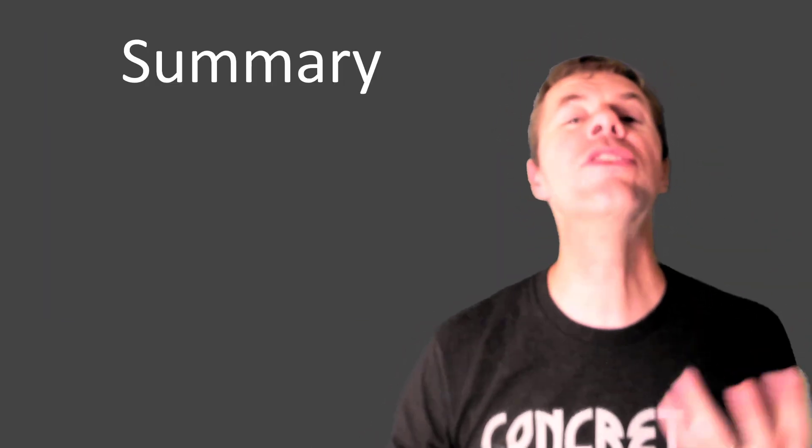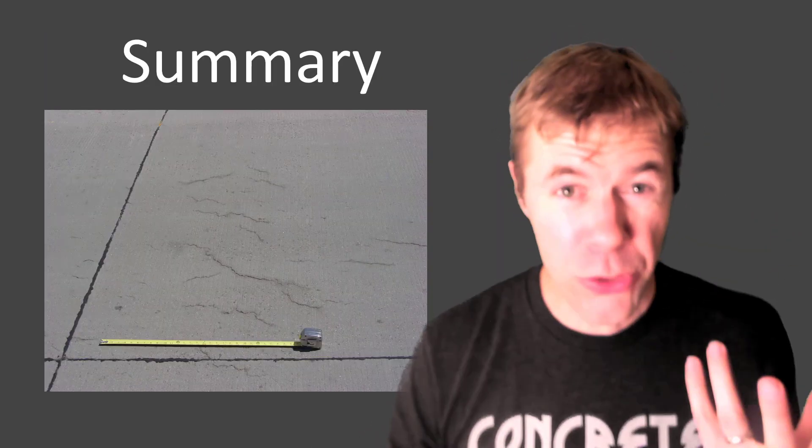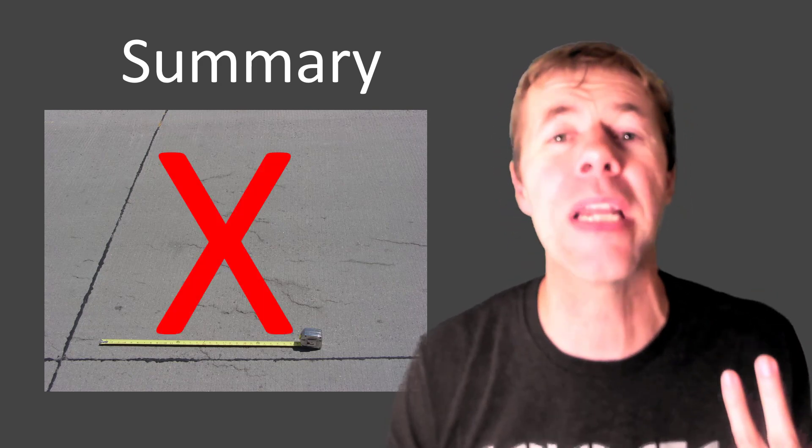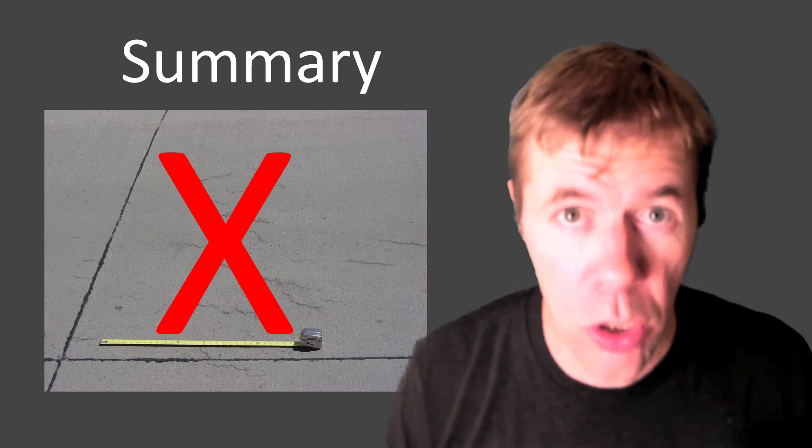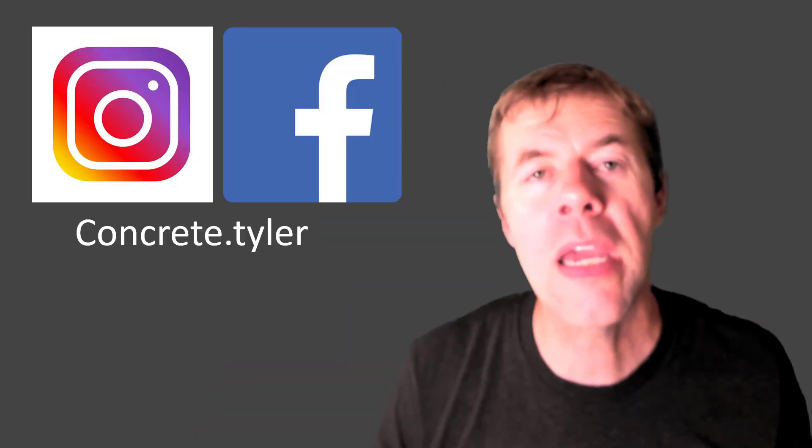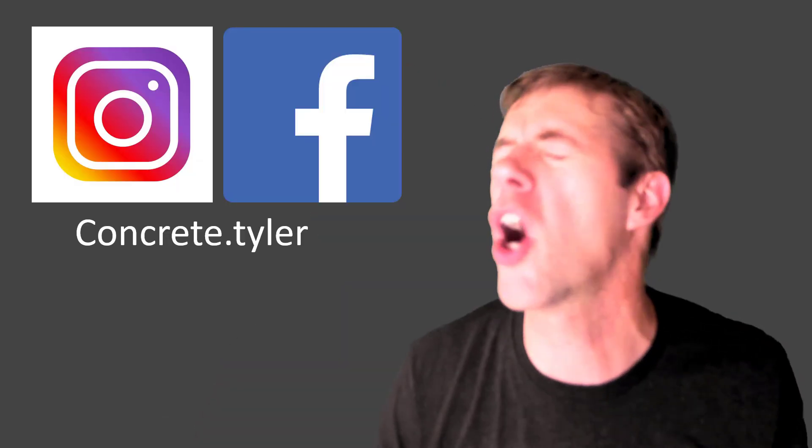So in summary, plastic shrinkage cracking, oh no, we want them to go away. We don't want those to ever happen again. And we can by designing our concrete for them, with ladies and gentlemen, one pound of microsynthetic fibers per cubic yard. I hope you dug this video. I hope you found it useful. If you did, give me a thumbs up. Subscribe to my channel. Leave me a comment below. And of course, check me out on Instagram and Facebook at concrete.tyler. Take care, everybody. Peace.